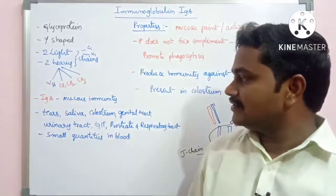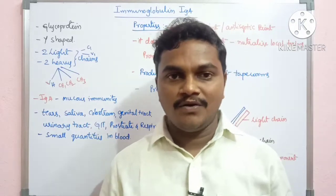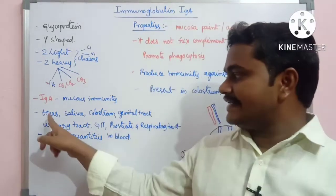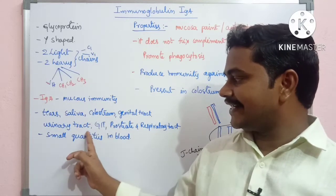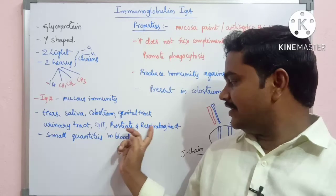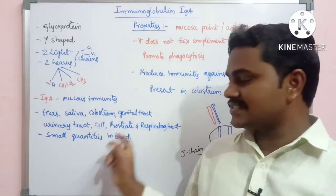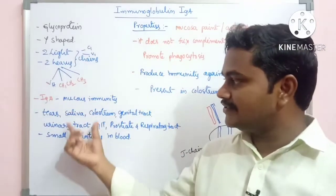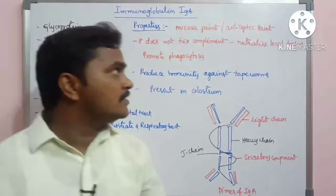Immunoglobulin A provides mucous immunity. The mucous layer is protected in areas such as tears, saliva, colostrum, genital tract, urinary tract, gastrointestinal tract, prostate, and respiratory surfaces. It is also present in small quantities in blood.